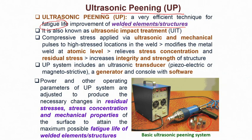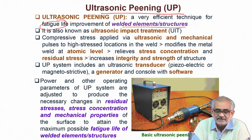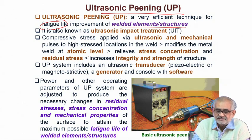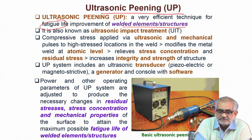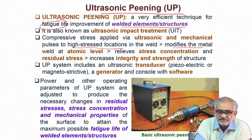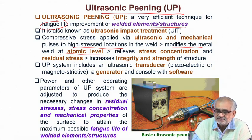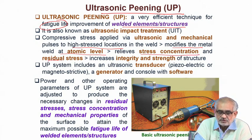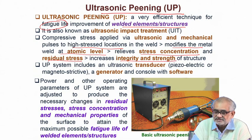These are essentially very high frequency pulses — the very name ultrasound gives the impression of very high frequency waves. These waves basically create a certain mechanical motion and kinetic energy. We target highly stressed locations in the weld and want to modify the metal at the weld junctions at very shallow depth, typically at atomic scales. This actually relieves stress concentration and residual stress and increases the integrity and strength of the structure.